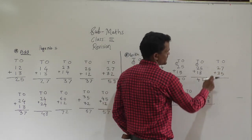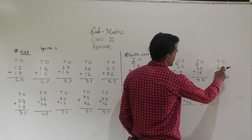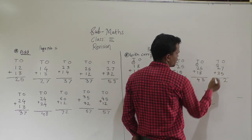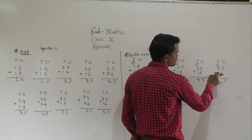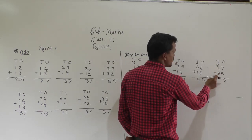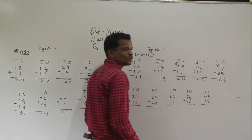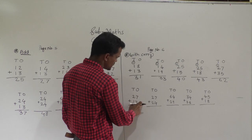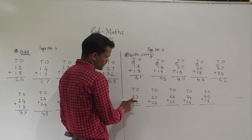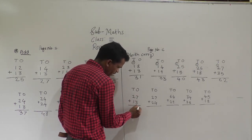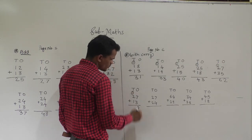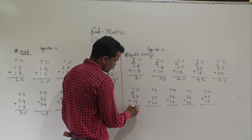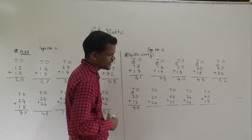Then 27 plus 35: 7 plus 5 is 12 — write 2 here and carry 1 forward. 2 plus 3 is 5, plus 1 is 6. So 62 is the answer. Then 27 plus 13 — start from the ones place. 7 plus 3 is 10 — write 0 here and carry 1 to the tens place. 2 plus 1 is 3, plus 1 carry is 4. So 40 is the answer.